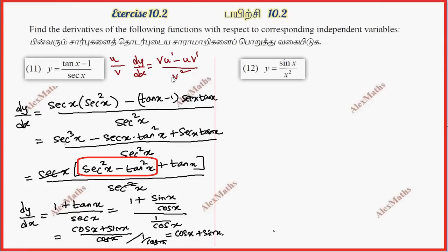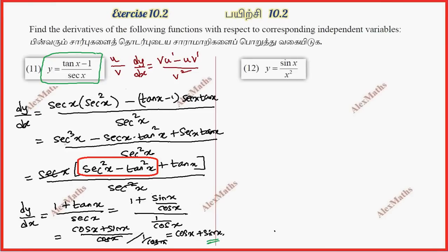Starting with sin and cos, using u by v method. If dy by dx, u by v formula is v u dash minus u v dash, whole divided by v square.